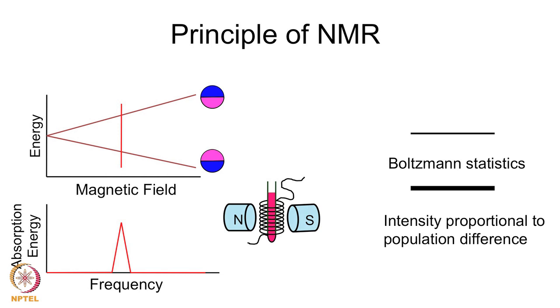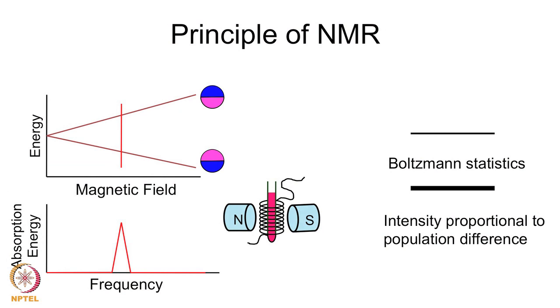If energy corresponding to the energy difference between the two levels is supplied, there will be absorption at that particular frequency — this is the NMR signal. The intensity of this signal is proportional to the energy absorbed and therefore proportional to the population difference between the two states.